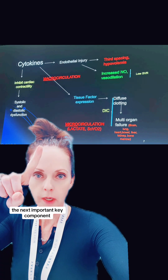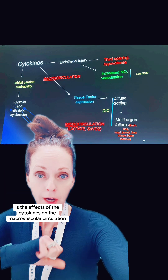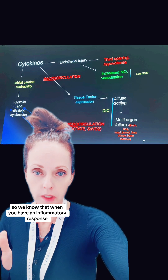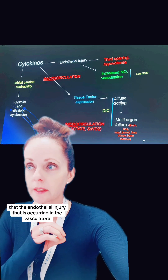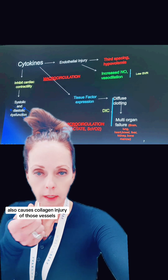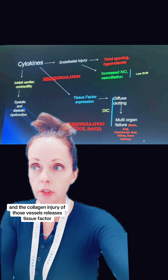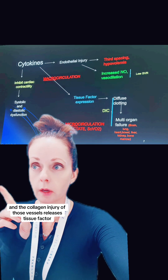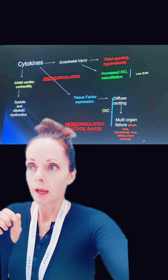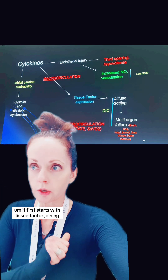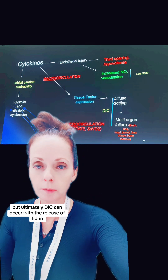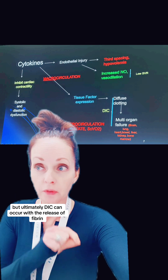The next important key component is the effects of the cytokines on the macrocirculation. When you have an inflammatory response and the cytokines are released, the endothelial injury occurring in the vasculature also causes collagen injury of those vessels. The collagen injury releases tissue factor, and then the clotting cascade gets activated — starting with tissue factor joining factor seven and proceeding from there — and ultimately DIC can occur with the release of fibrin.